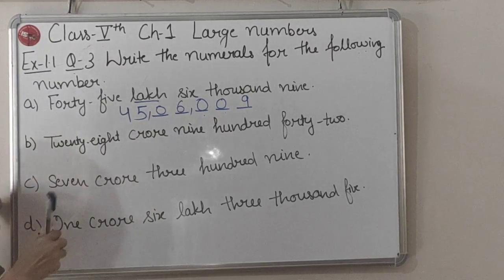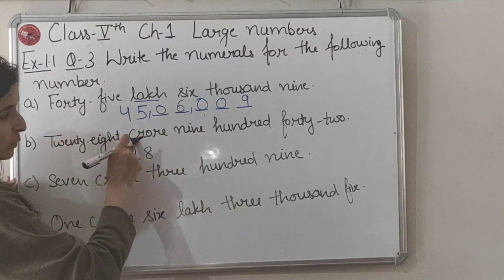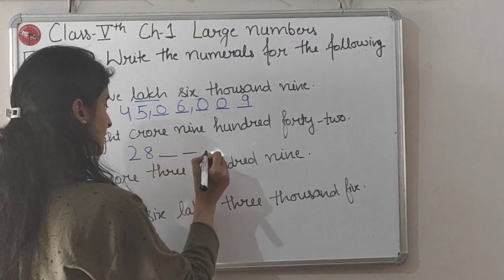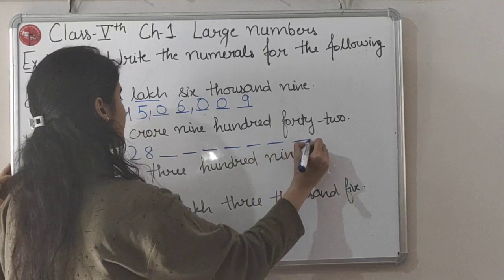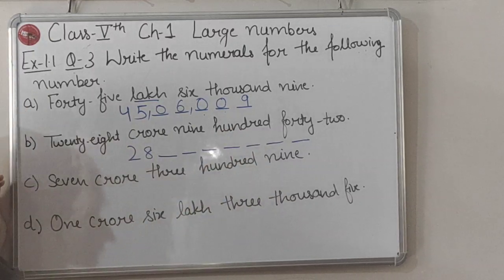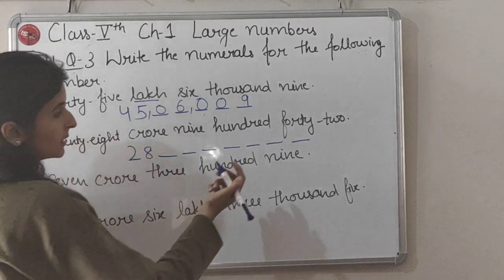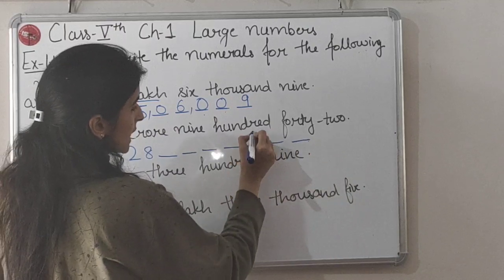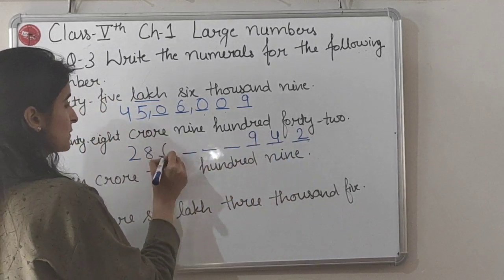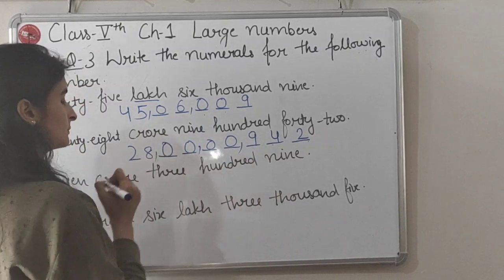For part B, it is 28 crore, 900, 42. We write 28 first. In crore there are 7 zeros, so we leave space for 7 digits. Then 900 — in hundreds there are 2 zeros, so we leave 2 digit spaces and write 9. Then 42 is written last. The blank spaces are filled with zeros, and then we put commas.